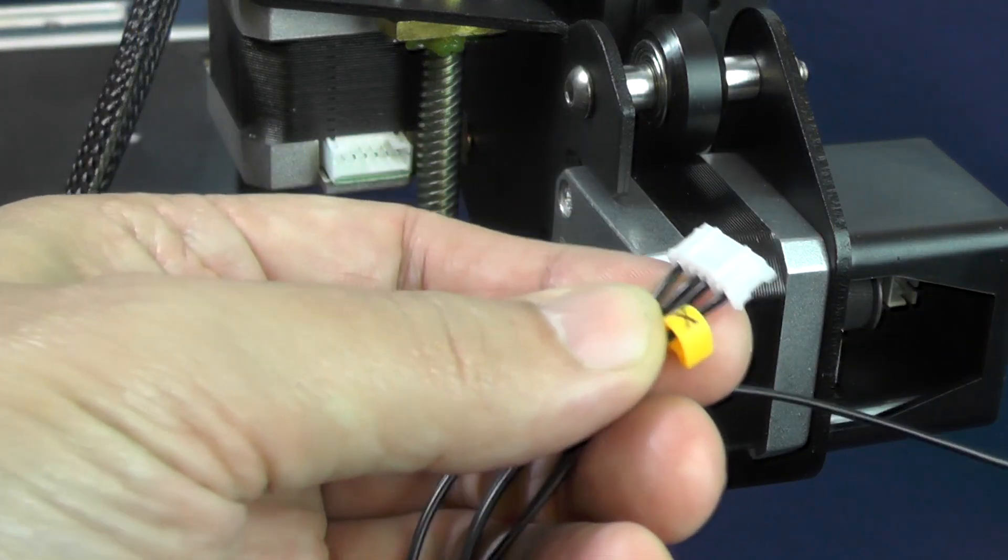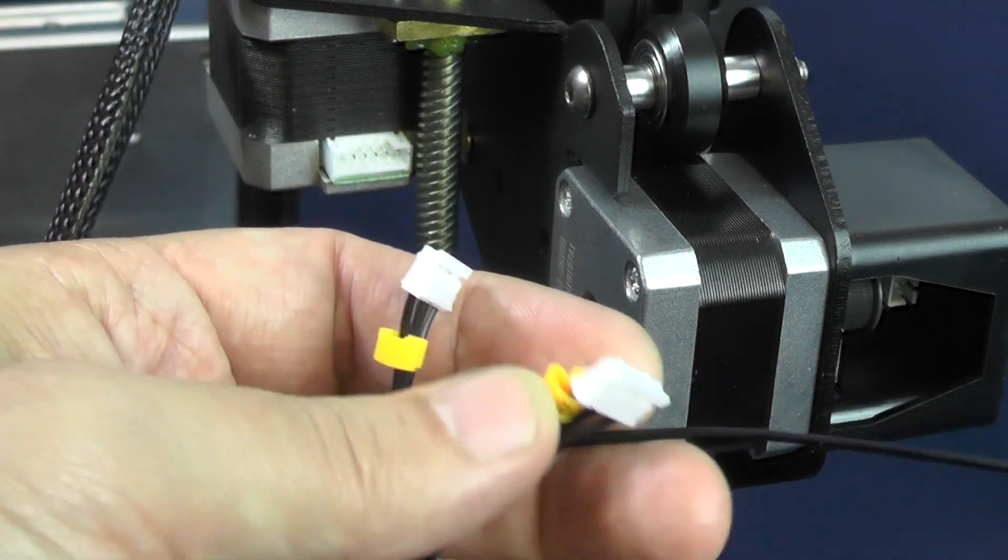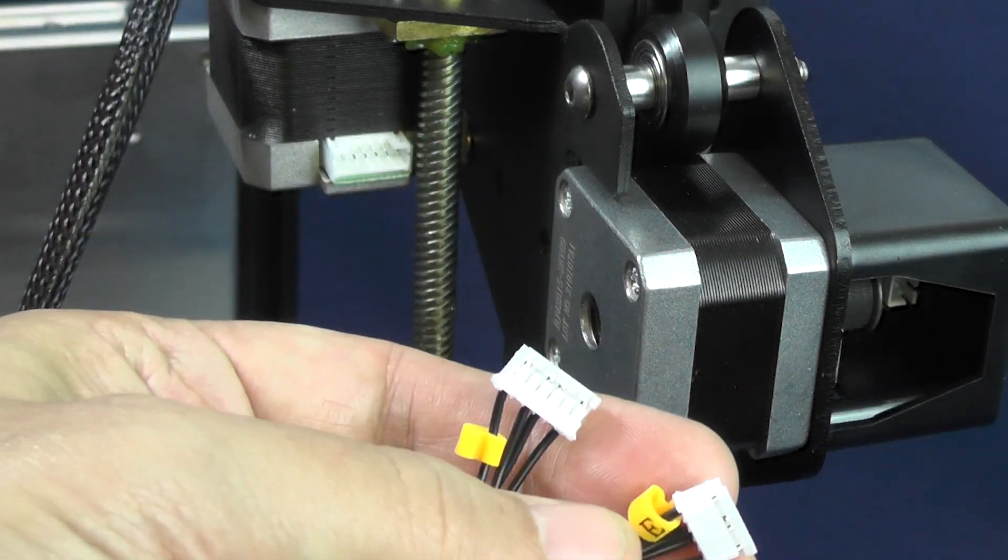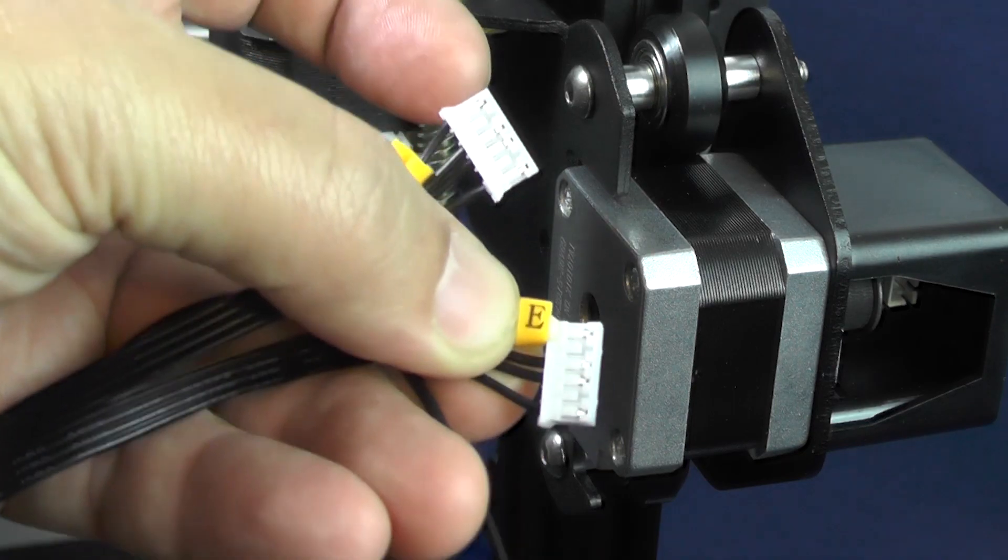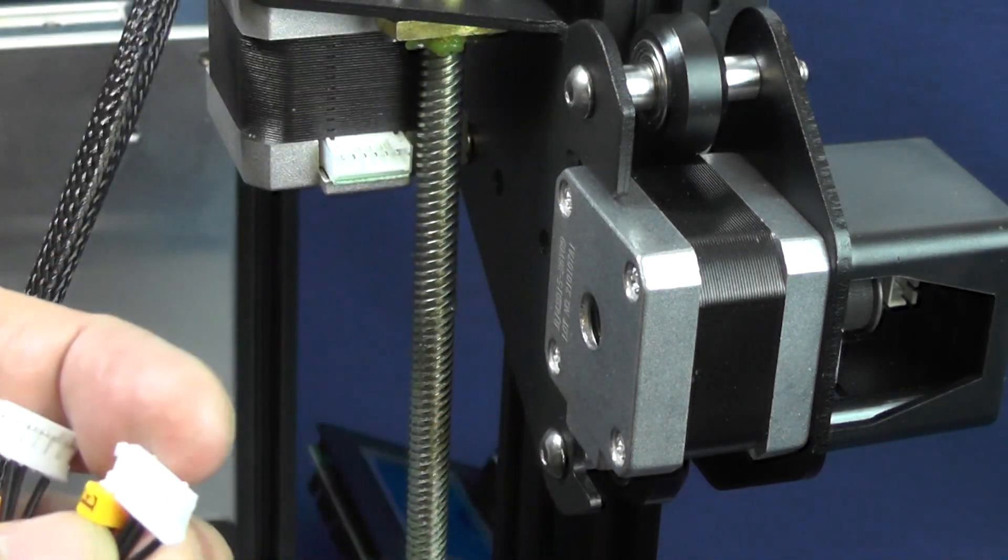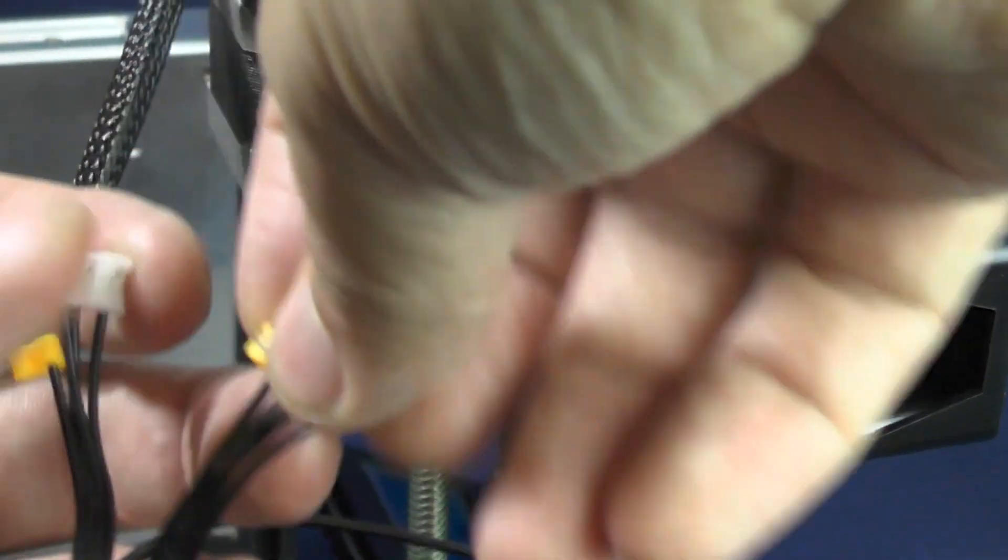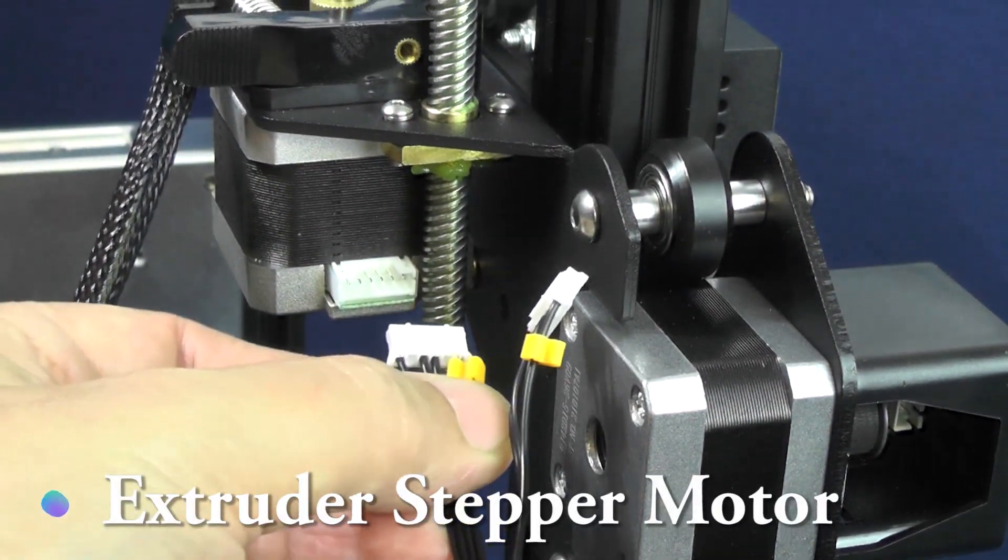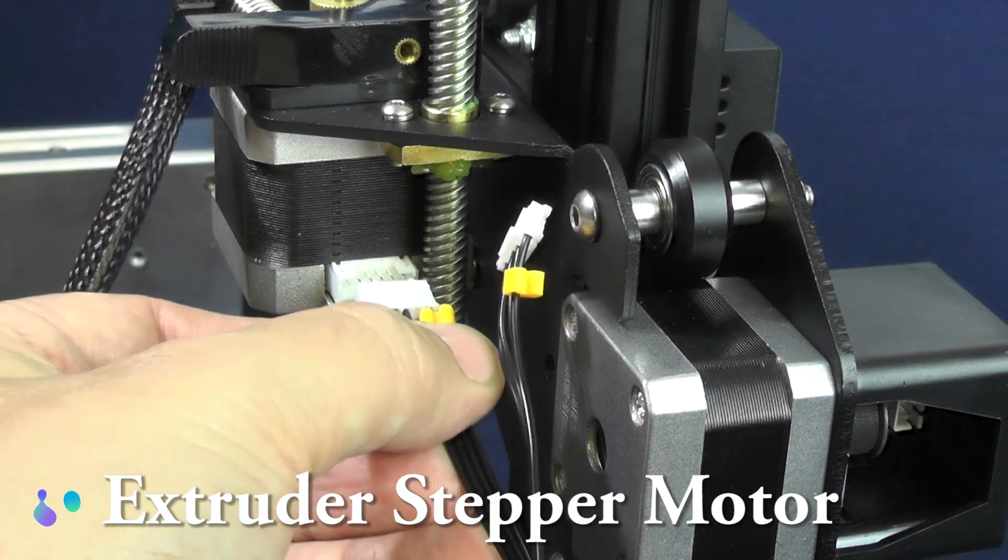Each of the electric cable connectors come with this yellow tag featuring a letter. This letter will help us figure out where each cable connector goes. We can start with the larger connector with the letter E, which indicates that we are supposed to connect it to the stepper motor for the extruder.